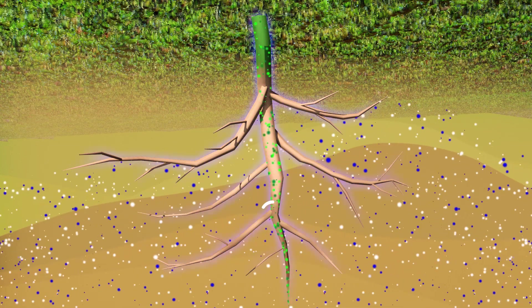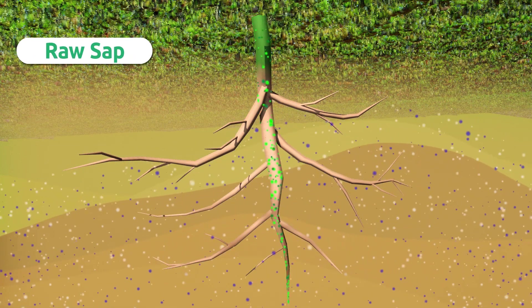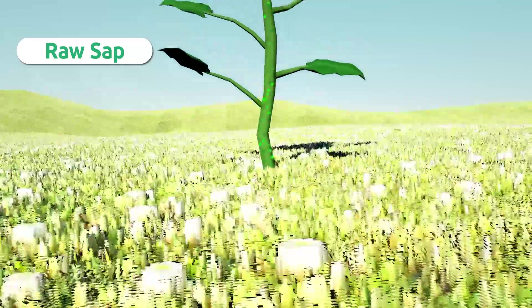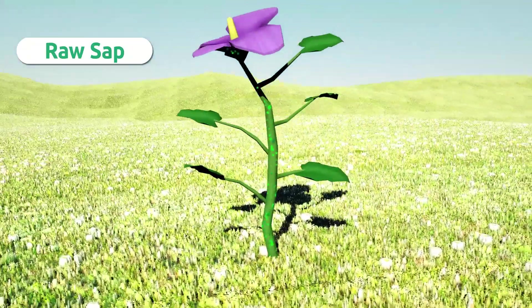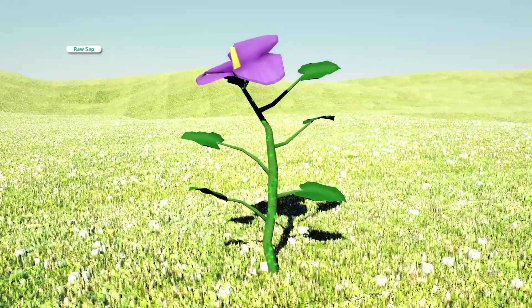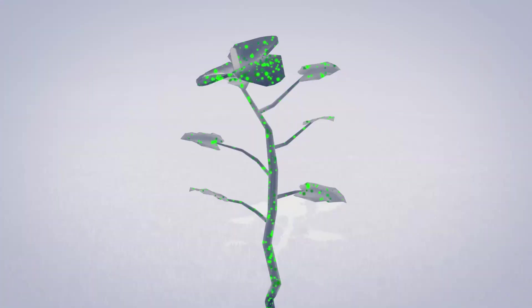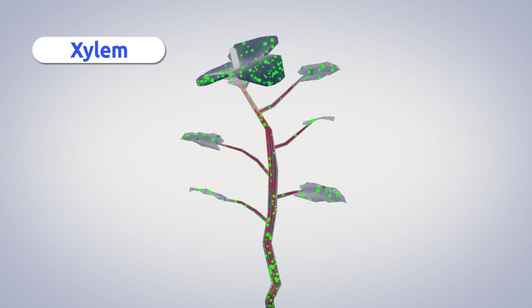This fluid mixture is called raw sap. Raw sap flows up the roots to the stem and travels through the rest of the plant to the leaves, with the help of woody transport tissues called xylem.